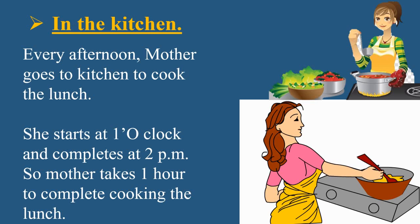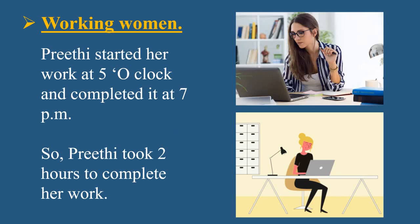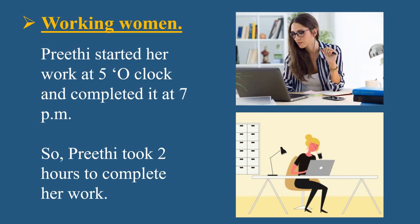Next example — the last one — a working woman. Priti started her work at 5 o'clock and completed it at 7 PM. So students, if Priti started her work at 5 o'clock and completed it at 7 PM, how many hours did she take? Yes, she took 2 hours. So Priti took 2 hours to complete her work.